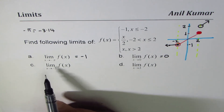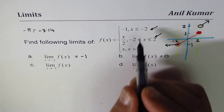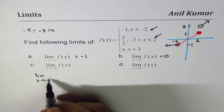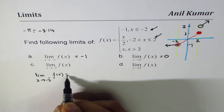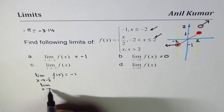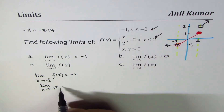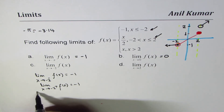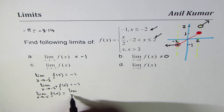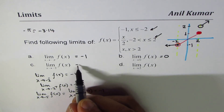Now the tricky part: the limit as x approaches -2. We examine one-sided limits. Approaching from the left, f(x) = -1, so the left-hand limit is -1. Approaching from the right along the second piece, substituting -2 gives -1, so the right-hand limit is also -1. Since both one-sided limits are equal, the limit exists and equals -1.